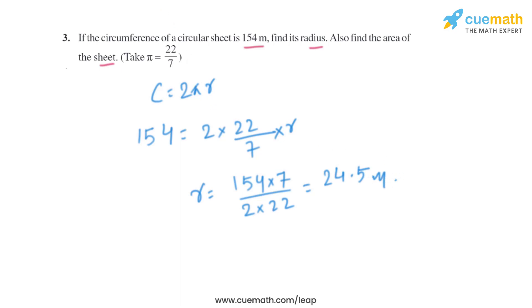Now we just have to find the area of the circle when the radius is known. We know the formula to find the area, that is πr², or we can say 22/7 × 24.5 whole squared.